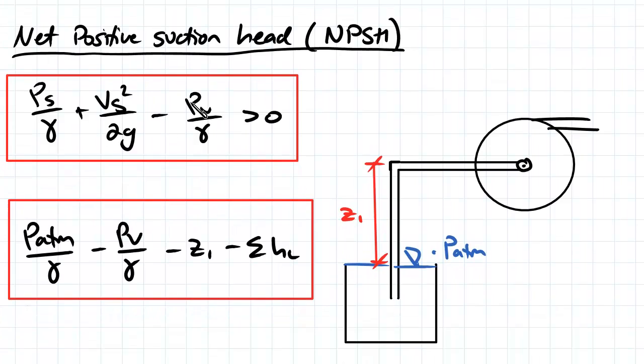This first equation is the net positive suction head required, which generally applies for any pump. We need to ensure that the pressure on the suction side divided by unit weight, plus velocity squared divided by 2g, minus the vapor pressure divided by unit weight, is greater than zero.